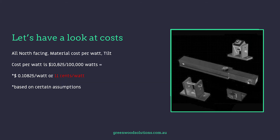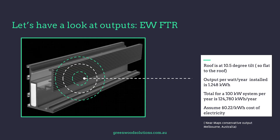Continuing with the costs for the all north-facing tilt scenario, the cost per watt is $10,825 divided by the 100 kilowatt system, giving effectively 11 cents per watt, based on these assumptions. Now let's look at the outputs for an east-west flat to the roof situation, where the roof is at a 10.5 degree tilt and we're going flat to the roof.